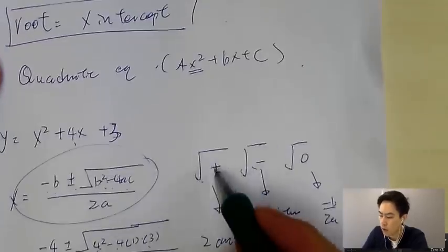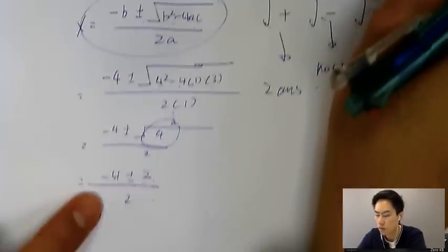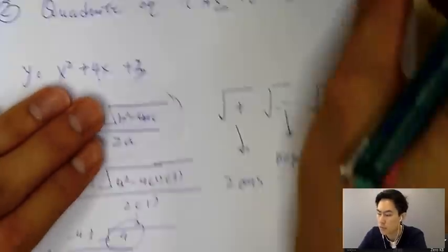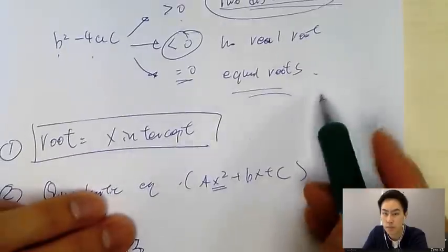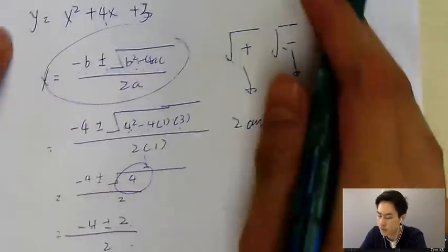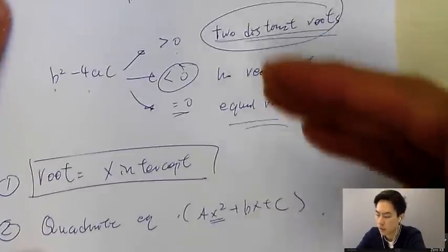That summarizes why: if b squared minus 4ac is bigger than zero, you have two roots — one from plus, one from minus. If smaller than zero, no solution. If equal to zero, equal roots — because there's only one solution, which is minus b over 2a.